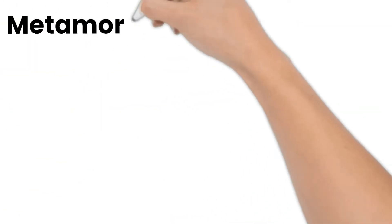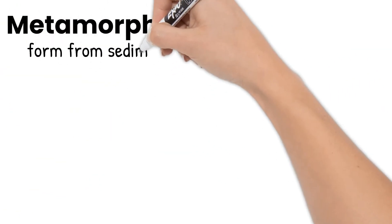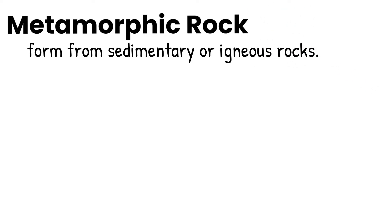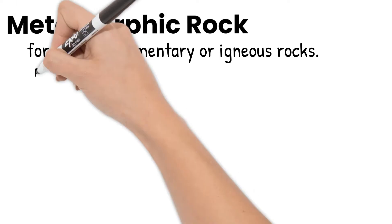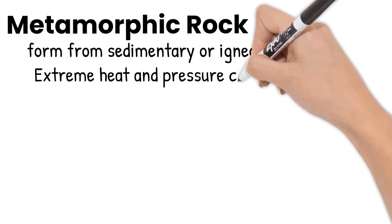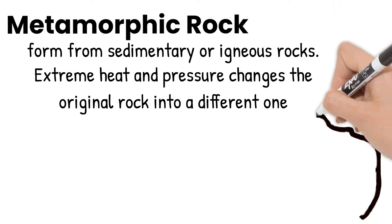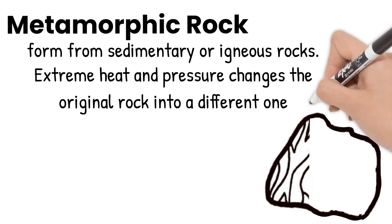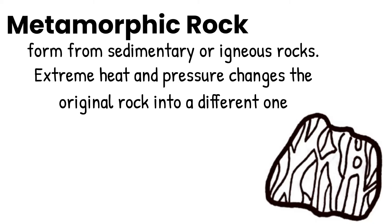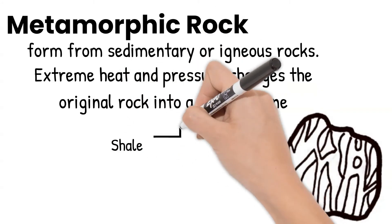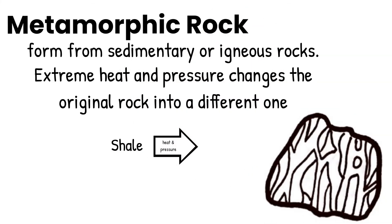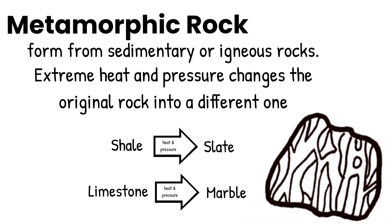Lastly, metamorphic rocks form from sedimentary or igneous rock. If sedimentary or igneous rock below earth's surface are exposed to extremely high temperature and pressure, they change into a completely different rock — a metamorphic rock. For example, the sedimentary rock shale under extreme temperature and pressure becomes slate. Limestone becomes marble.